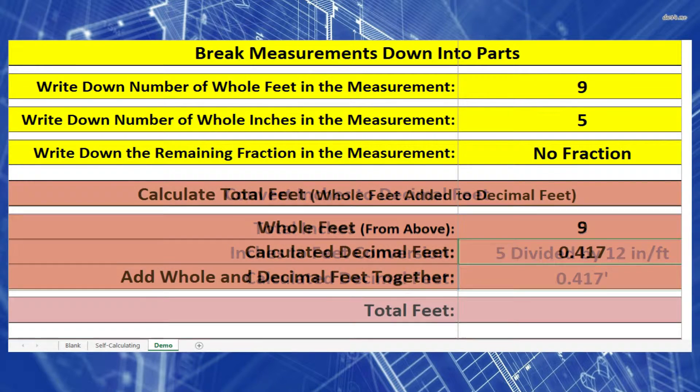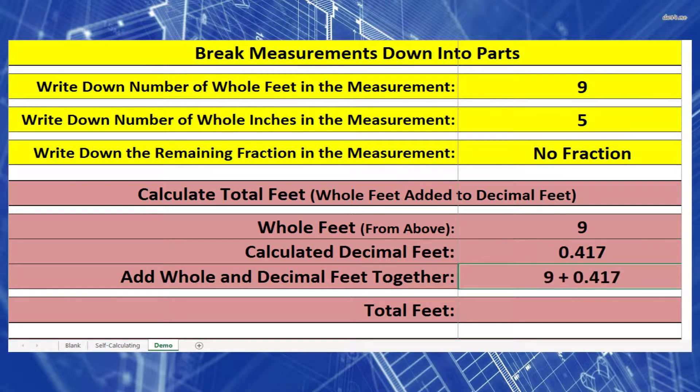We take our whole feet and add it to our decimal feet. 9 plus 0.417 feet equals 9.417 feet.